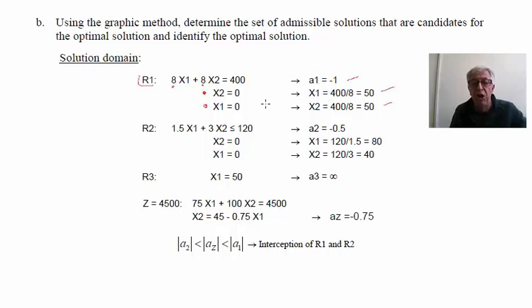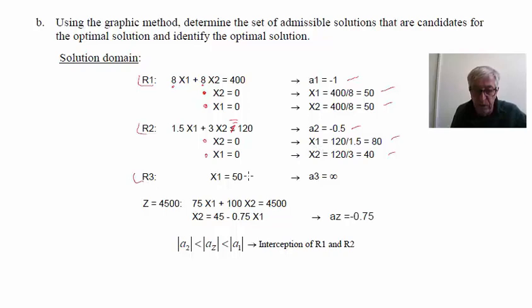For the second restriction, we evaluate the boundary intersections: x1 = 80 and x2 = 40, with an inclination of minus 0.5. Restriction 3 is a vertical line with infinite inclination. The lines of Z have an inclination of 0.75. With these values, we can anticipate that the intersection of restrictions 1 and 2 will define the optimal solution.